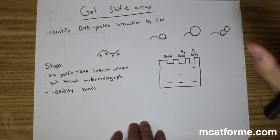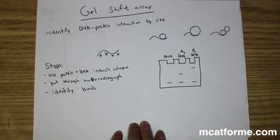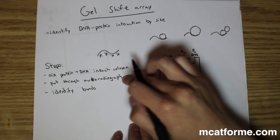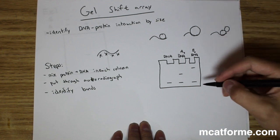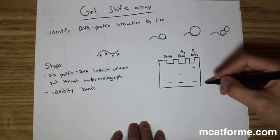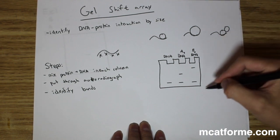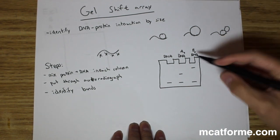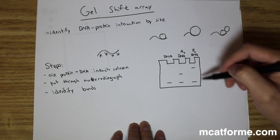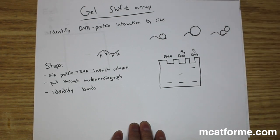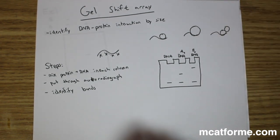We don't need to know exactly how the autoradiograph works or even that term. What we actually need to know is how to identify the bands. So our last step is identifying what all these bands even mean.